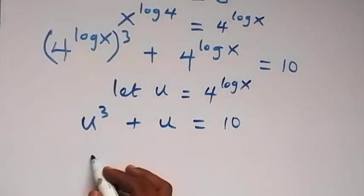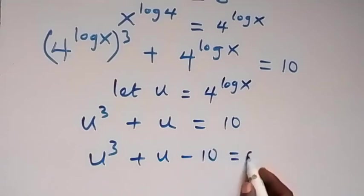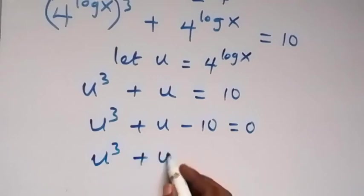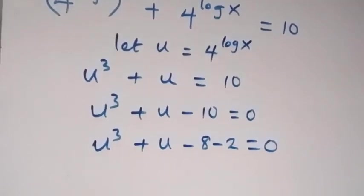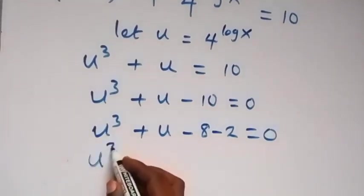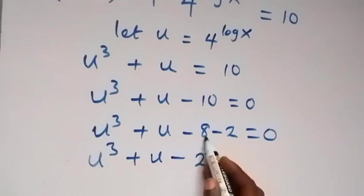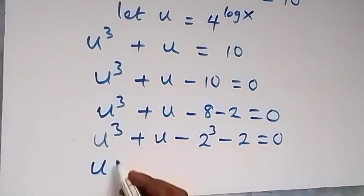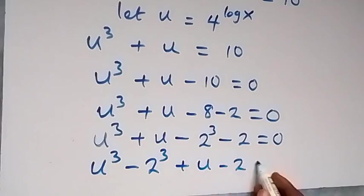Let's bring 10 to the left side. We have u³ + u − 10 = 0. We can rewrite this as u³ + u − 8 − 2 = 0, and note that 8 is 2 raised to power 3. Rearranging, we group the cubic terms: u³ − 2³, then plus u − 2, equals 0.